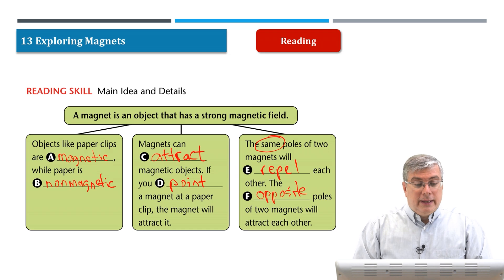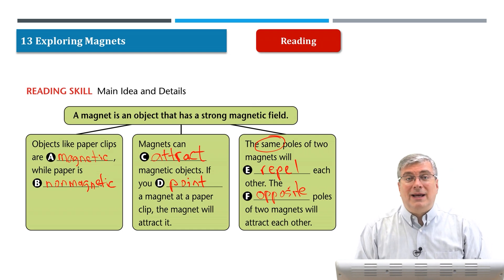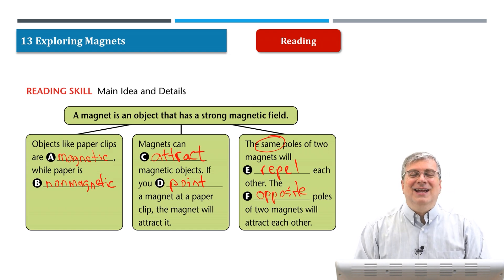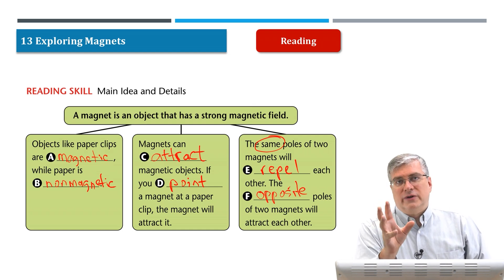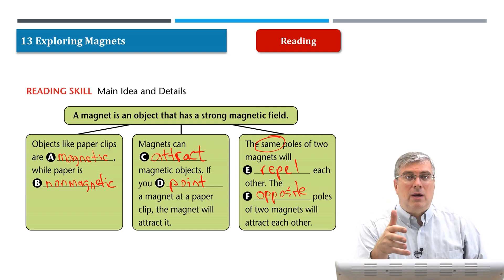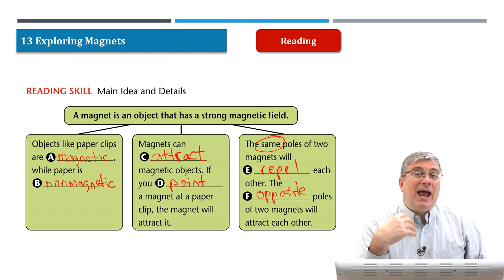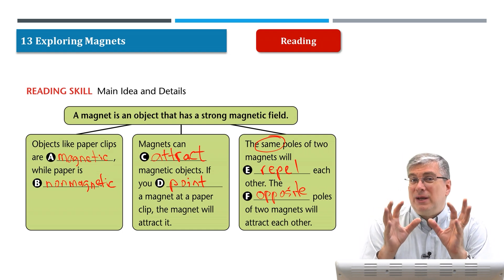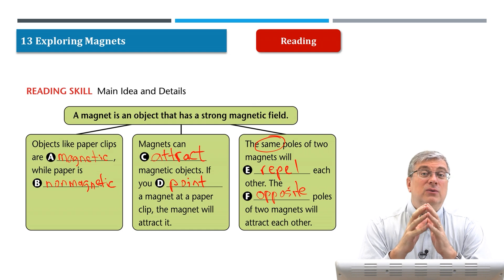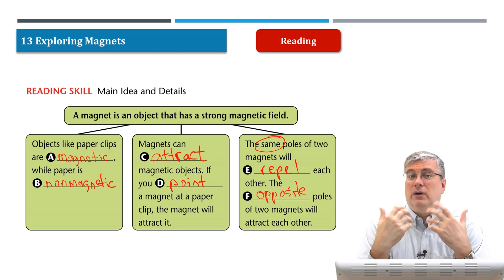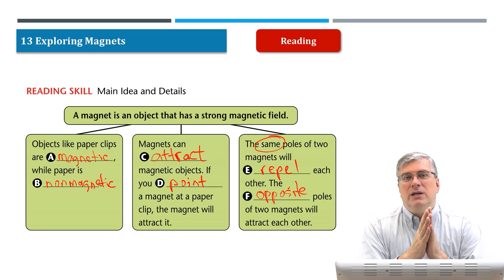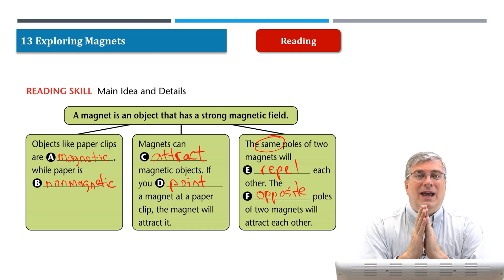That wraps up our lesson for today. Magnets are kind of cool to play with. It's also neat to think about the magnetic force — not just around magnets, but the earth is like a big magnet too. It's interesting to read more about magnetism and magnetic fields and how they work around us, and especially the different applications that scientists and people in technology have been able to invent to make our lives easier. A very common example is the refrigerator door. What other examples can you think of? Magnets are in use all around us all the time and they're very helpful.